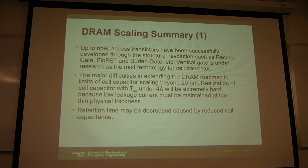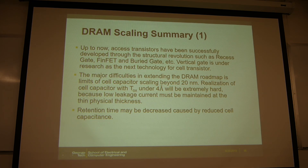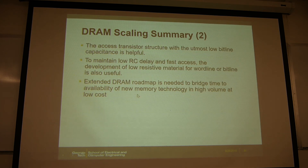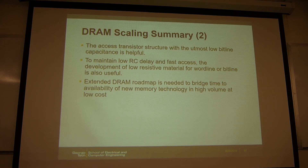In summary for DRAM scaling: it is very difficult to scale below 20 nanometers because of challenges in maintaining CS. A new technology to replace DRAM has not been identified yet — DRAM must remain. Looking at emerging technologies, none of them can replace DRAM at this point. For last-level cache, STT-MRAM might replace SRAM, but for DRAM, no emerging technology can serve as a replacement at this moment.